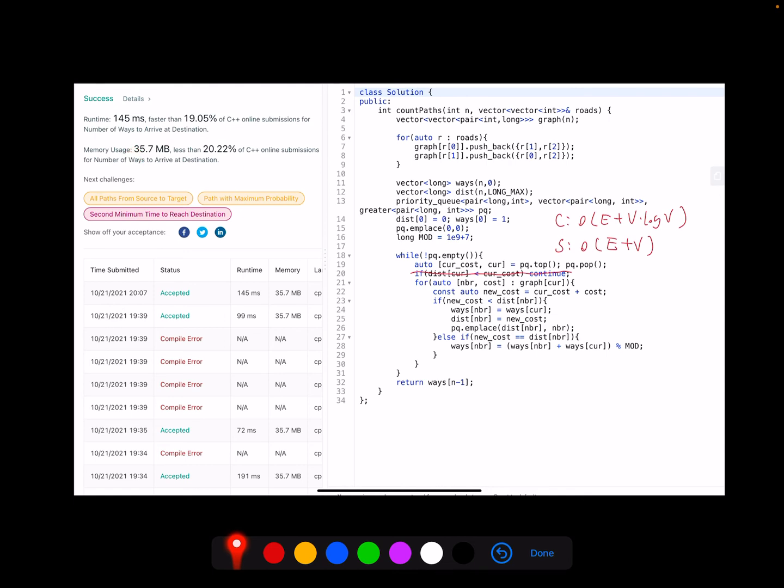Regarding the time complexity, it's O(E + V log V). E here means number of edges. V means number of nodes. E also is just the size of the roads here. Then V is n. Now I'm not going to go into too deeply to say how Dijkstra has this complexity. The quick answer is just to memorize it, because I think the proof process may be a little bit difficult.